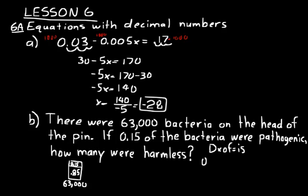And that would be 0.85 times 63,000. And so we can just do that on our calculator. 0.85 times 63,000. And we should get 53,550. So that's how many of the bacteria were harmless.